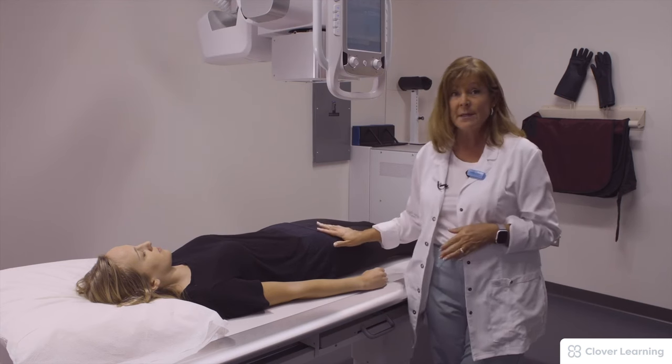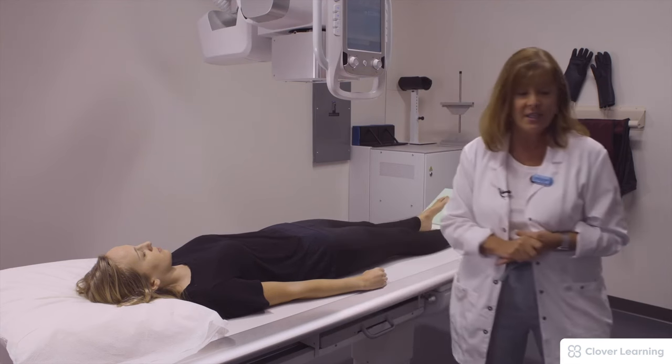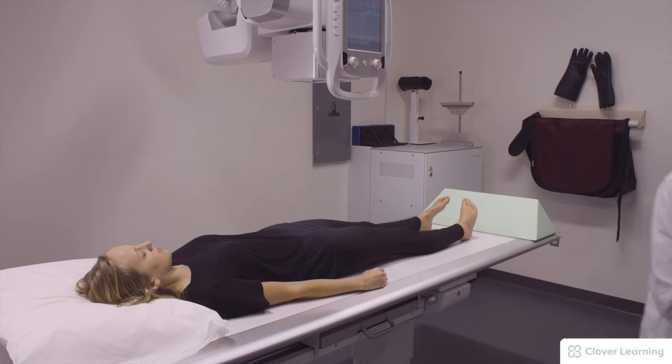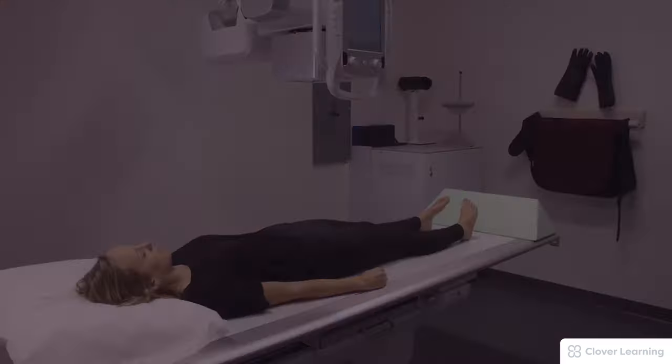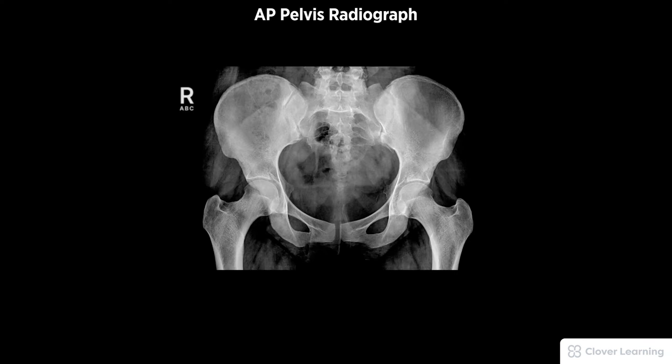She will suspend respiration and hold very still. A diagnostic AP pelvis radiograph must be free of motion and rotation. Demonstrated anatomy should include the entire pelvis and proximal femurs.